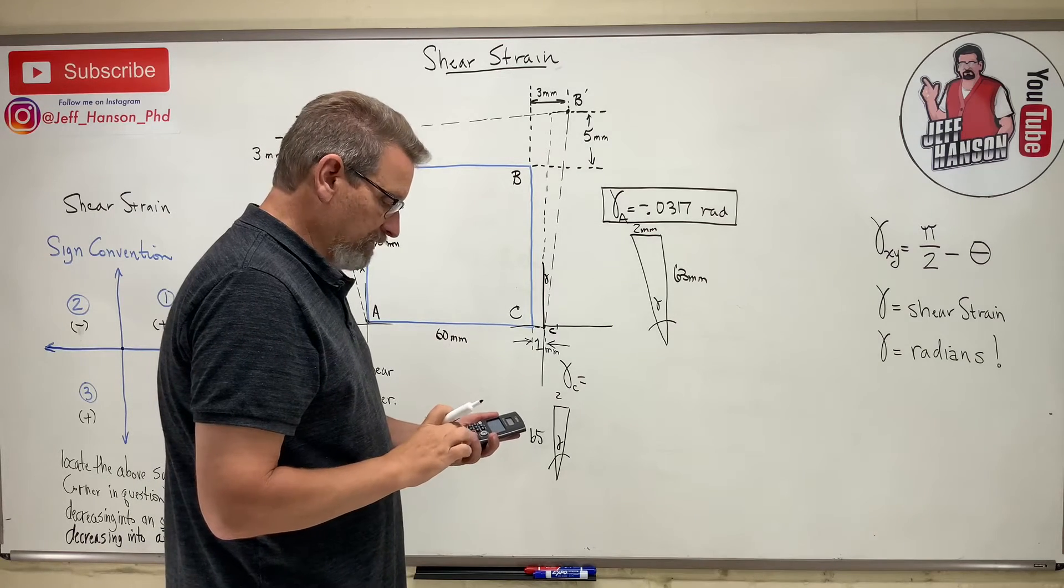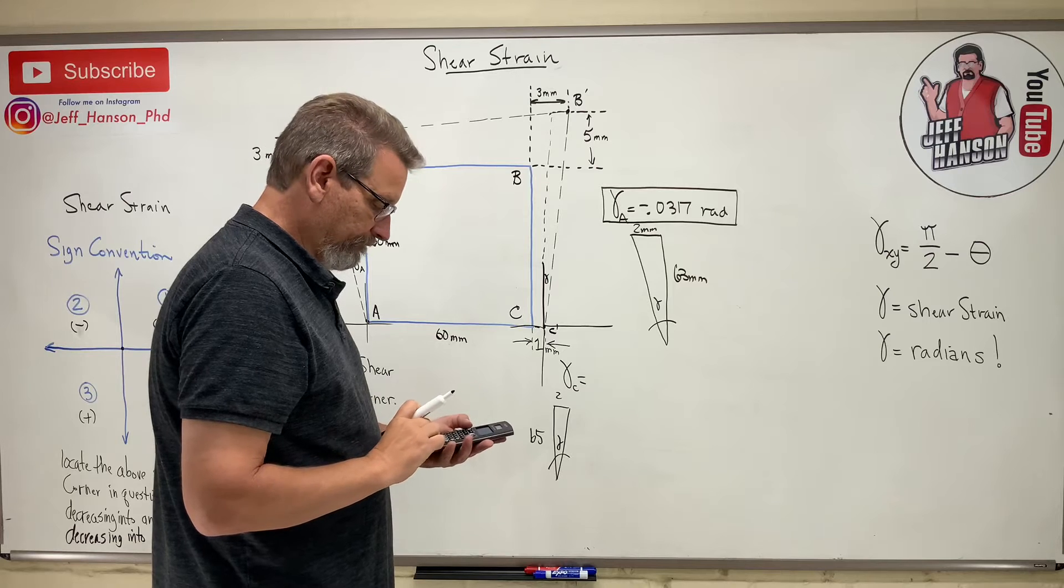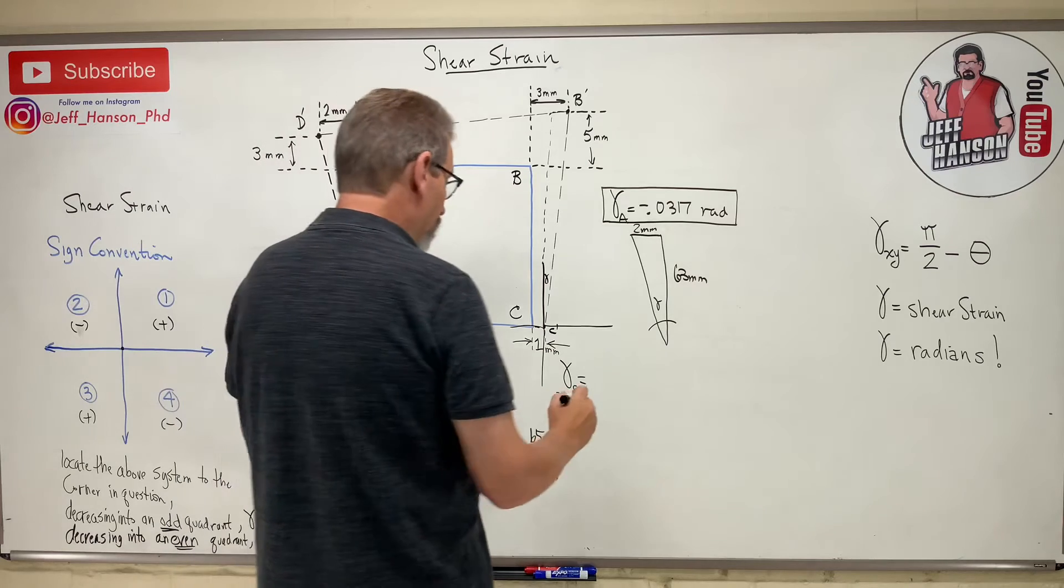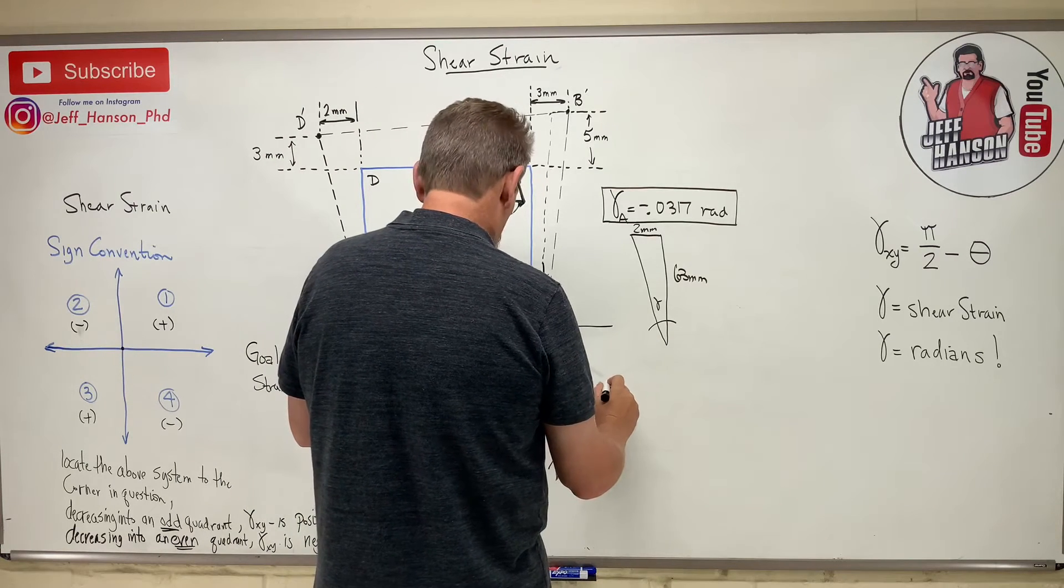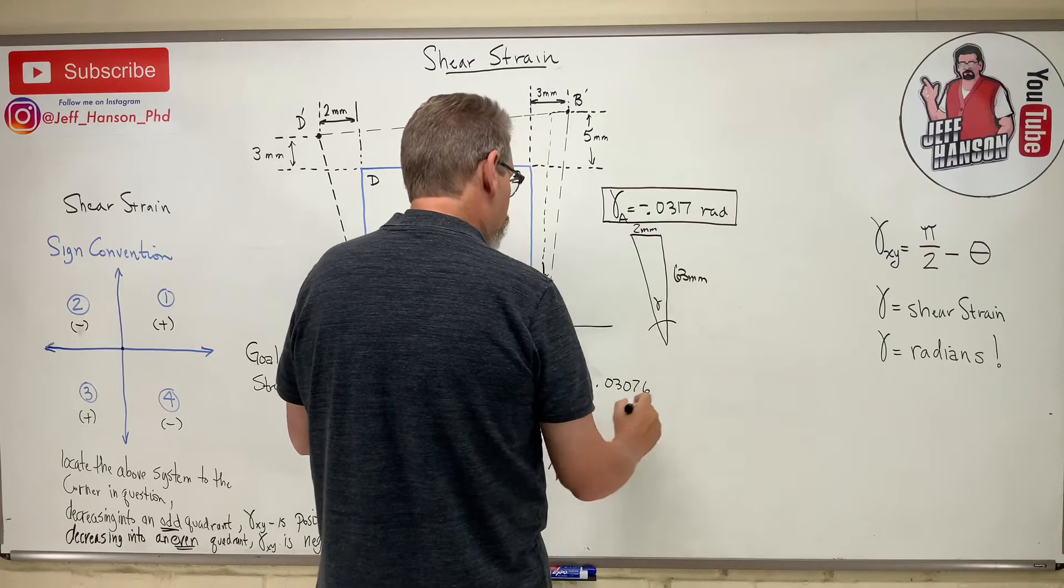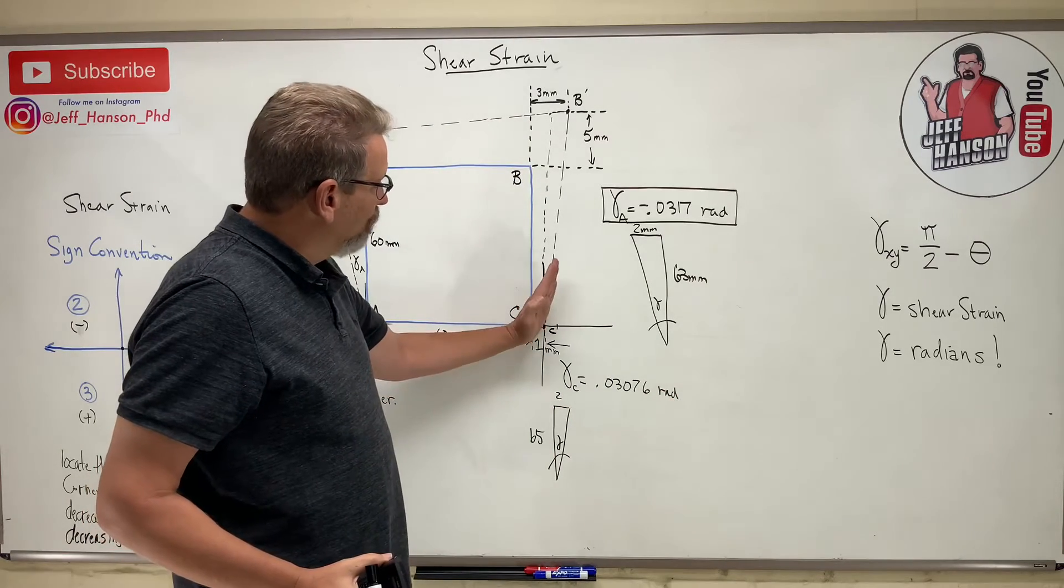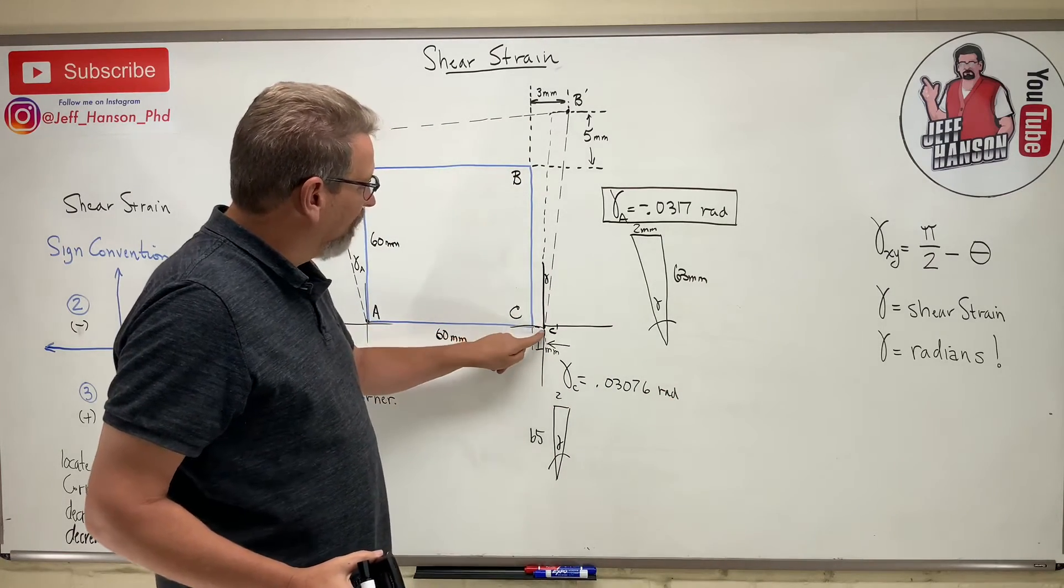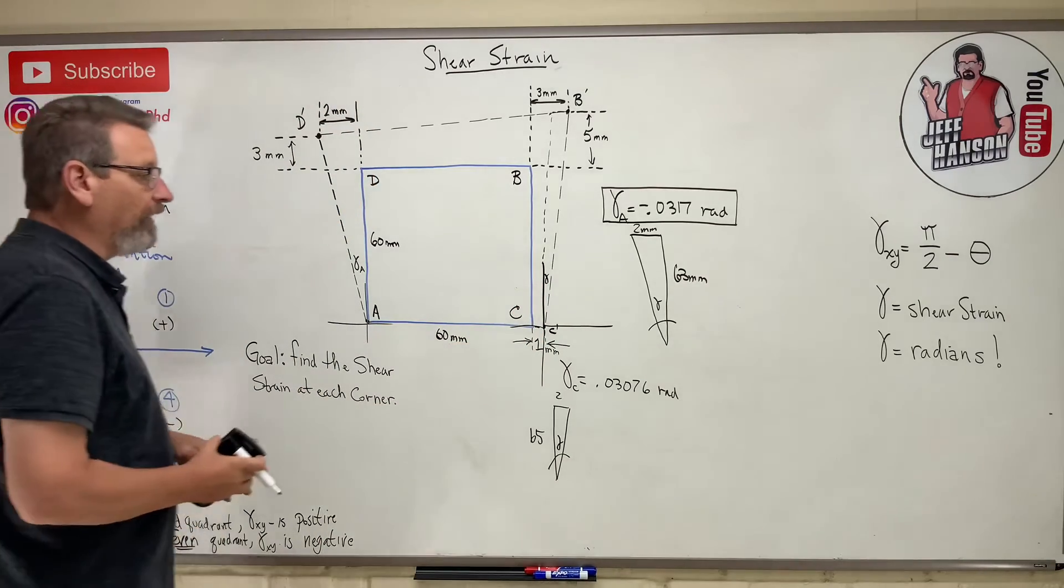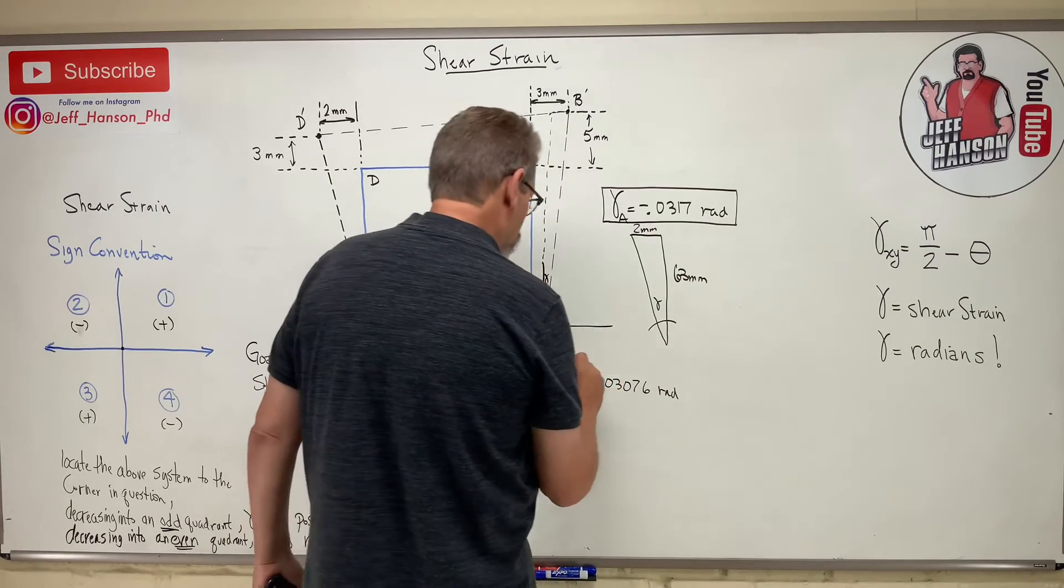So it's going to be 2 divided by 65 equals, inverse tan, equals, same answer, 0.03076. Radians. Now, that one is going into quadrant 1. It's going into quadrant 1, quadrant 1's a positive, isn't it? So positive. There's C.